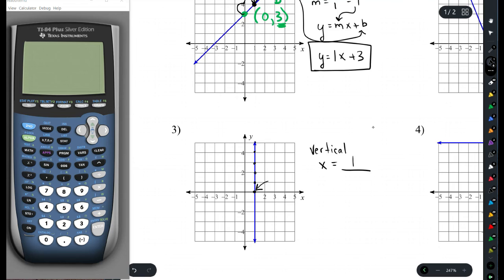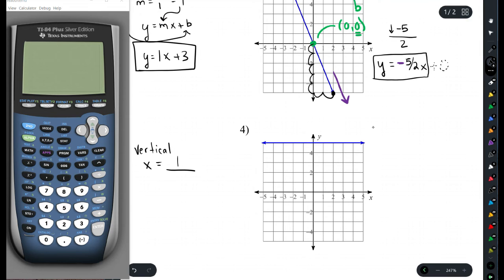Similarly, y equals is a horizontal line. So, if you see a line that looks like this, we know it's always of the form y equals some number. You're going to find the y value it crosses through and is the same throughout. And in this case, y equals 5.